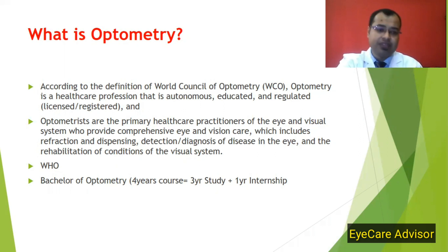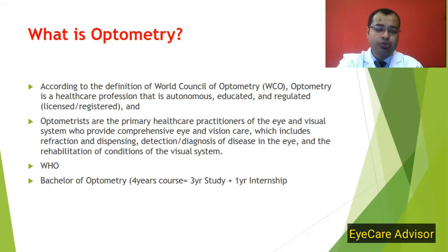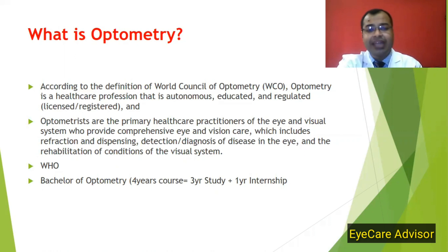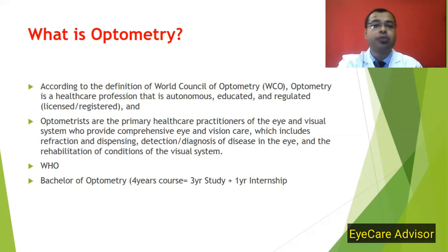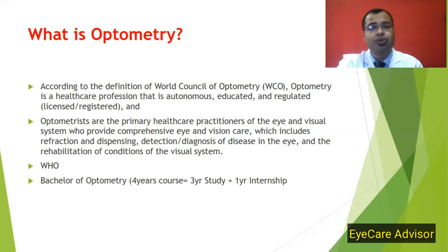Before moving to the next slide, I want to mention that as per the World Health Organization, all over the world there are around 285 million persons who have some sort of visual disorder or vision loss. Out of that, 43 percent — around 123 million — is from refractive errors, where the optometrist can play a major part by giving them the proper spectacle prescription or contact lens prescription to help them see more clearly.